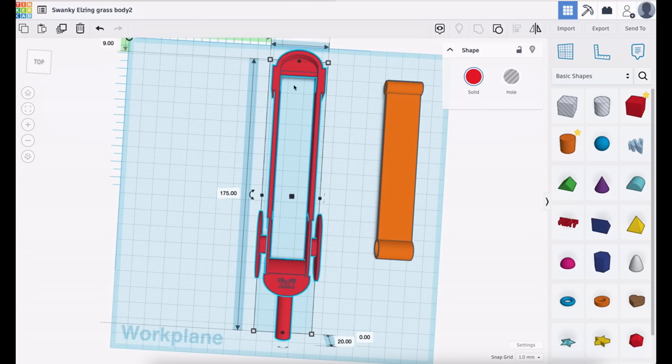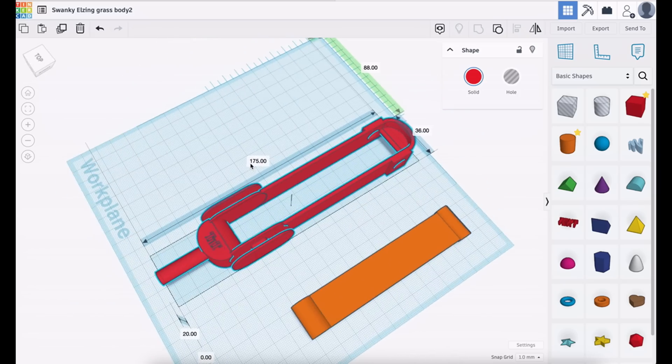And of course we could cut the cost of the bearings and the rod that go through there by making an integral bearing. And at the moment, of course, these two bits are separate, so we have to put the bearings in and then put that in. With the integral bearing, of course the whole thing just prints and is ready to go. So again we're adding cost, so I'm going to probably put the integral bearings back in.